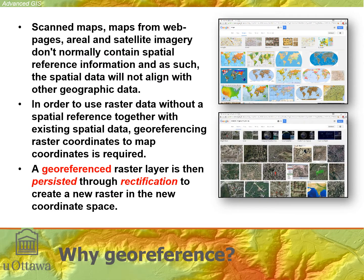There are many raster images available. They could be from the Internet or they could be from aerial or satellite platforms, remotely sensed images, which we know are rasters as well. Geo-referencing is the act of giving coordinates in the real world to these types of rasters.